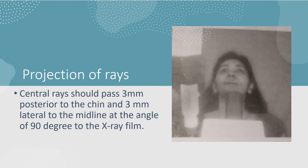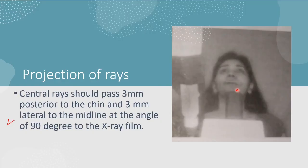For the mandibular lateral occlusal projection, the central rays should pass 3 mm posterior to the chin and 3 mm lateral to the midline, at 90 degrees. This concludes our discussion of occlusal radiography; the next session will cover other radiographic topics.